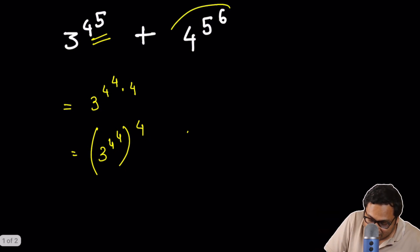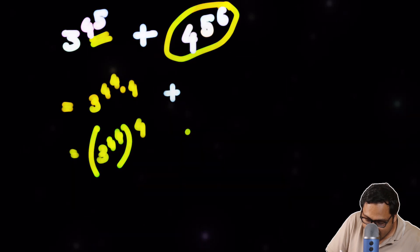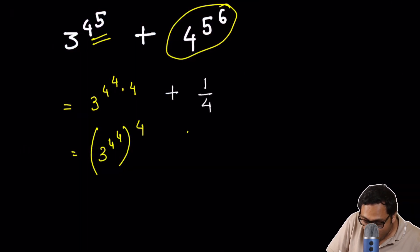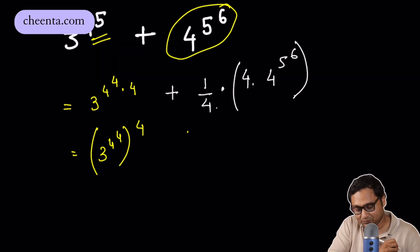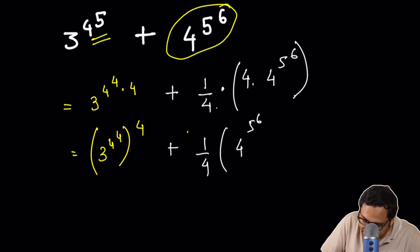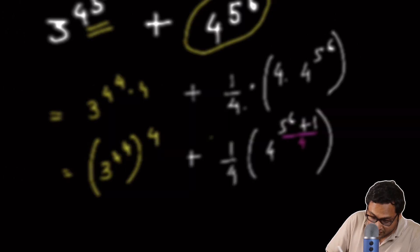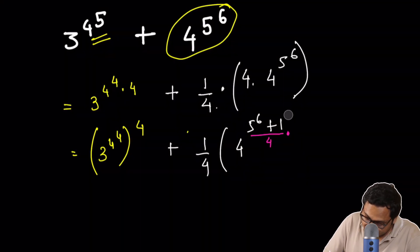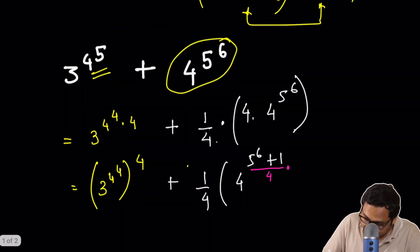Here, I will actually do 1 fourth of 4 times 4 raised to 5 to the power 6. And you will see in a second why this works out. Because it's 1 fourth, 4 to the power 5 to the power 6 plus 1. And we put the second bracket here. And maybe what we can do here is we can divide by 4 and we can multiply by 4. Let's try to divide by 4 and multiply by 4.